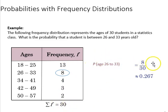There are a total of 30 students. So the probability, the outcome, the event is eight, and the sample space is 30. So that would be 0.267 would be the probability.